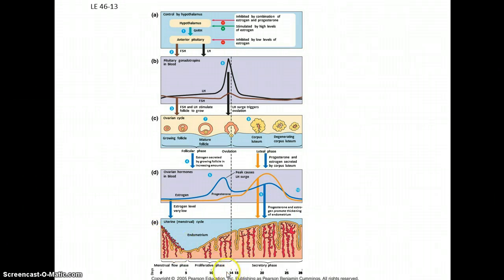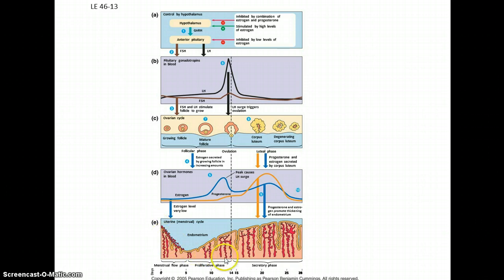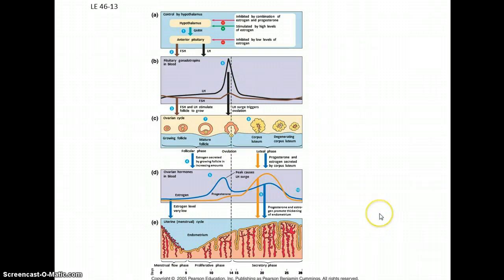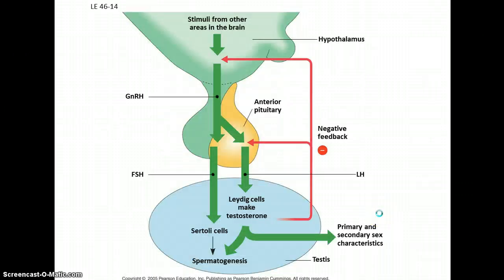In terms of the cycle, day one — time zero — is when the period starts. It's about 14 to 15 days after that when ovulation occurs, which is essentially when a woman is most fertile and most likely to become pregnant.